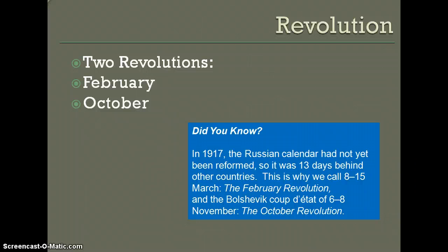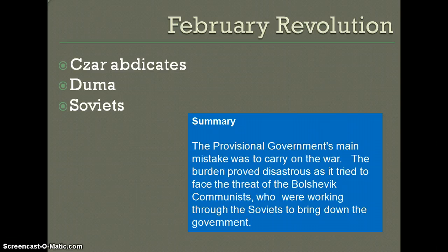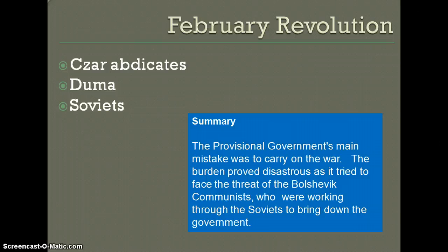In the February Revolution, the biggest event was the abdication of the Tsar — abdication meaning he gave up his power. Revolutionaries then formed a provisional government, meaning a temporary government. The biggest problem of this provisional government was that it decided to carry on the war. The burden proved disastrous as it tried to face the threat of the Bolshevik communists, who were working through Soviets — workers' councils — to bring down the government.